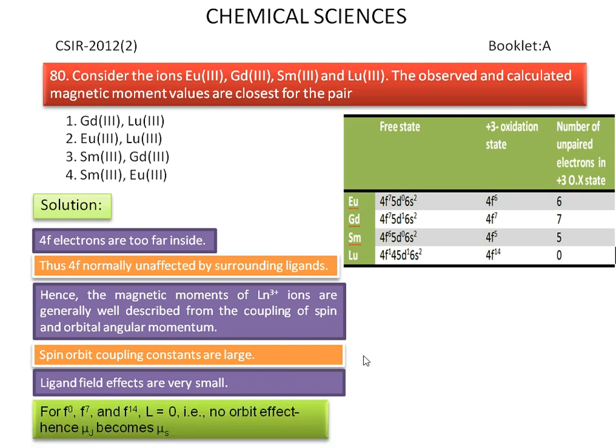But in the case of F0, F7 and F14, that is lanthanum, gadolinium and lutetium, L is equal to 0. That is, no orbit effect. Hence, nu-j becomes nu-s. That is, observed magnetic moment value becomes calculated magnetic moment value.